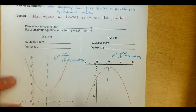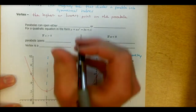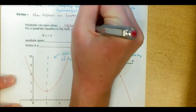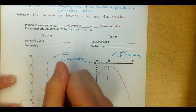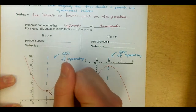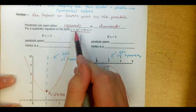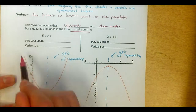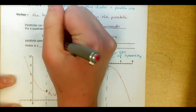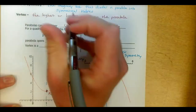For this parabola right here, you'll notice it opens upwards. Parabolas can either open upwards or downwards. For a parabola that opens upwards, the vertex is the lowest point on the graph. Assuming you have an equation in standard form — y equals ax squared plus bx plus c — your leading coefficient, which is the coefficient in front of the x squared term, if it is positive, the parabola is going to open upwards, and your vertex is the lowest point, or what we call a minimum.